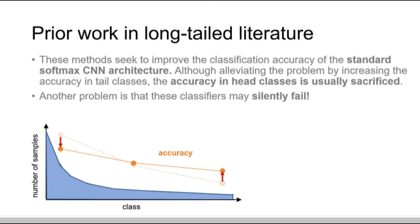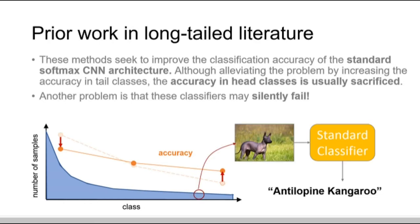Another critical problem is that these classifiers may silently fail. Taking an image as an example, the standard classifier may predict an entirely wrong answer for this image without any notice. This is very dangerous, especially for some high-risk tasks that cannot sustain errors like self-driving or medical usage.